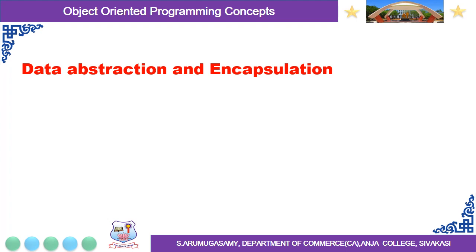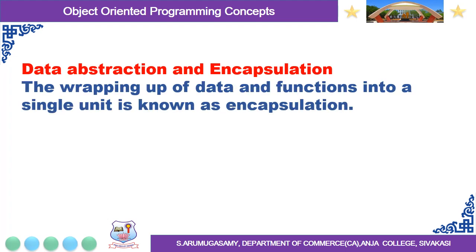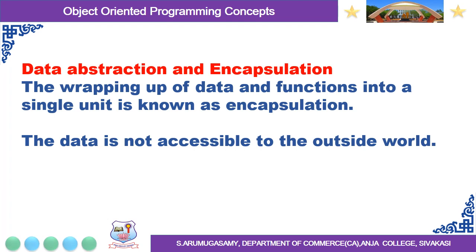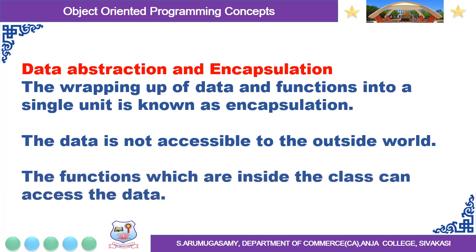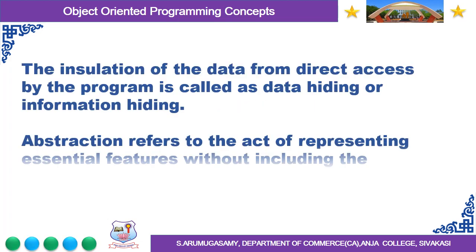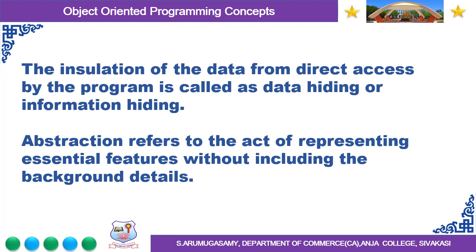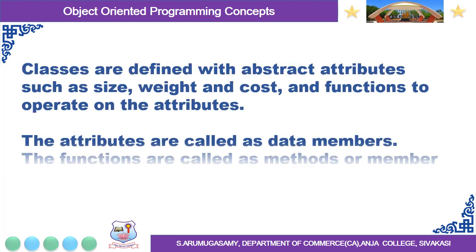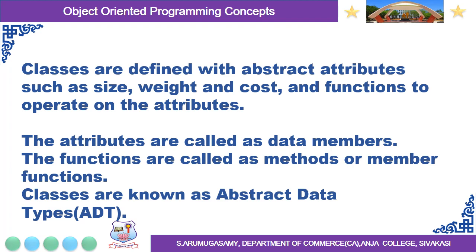The next concept is Data Abstraction and Encapsulation. The wrapping up of data and functions into a single unit is known as encapsulation. The data is not accessible to the outside world; only the functions which are inside the class can access the data. The insulation of the data from direct access by the program is called data hiding or information hiding. Abstraction refers to the act of representing essential features without including the background details. Classes are defined with abstract attributes such as size, weight, and cost, and functions to operate on the attributes. The attributes are called data members, and the functions are called methods or member functions. Classes are known as Abstract Data Types, that is ADT.